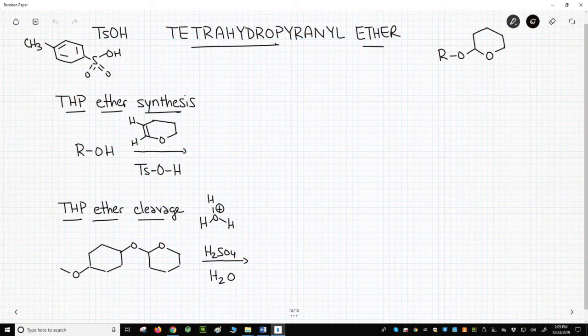A THP ether is a tetrahydropyranyl ether. A simple example is shown in the upper right of the slide.